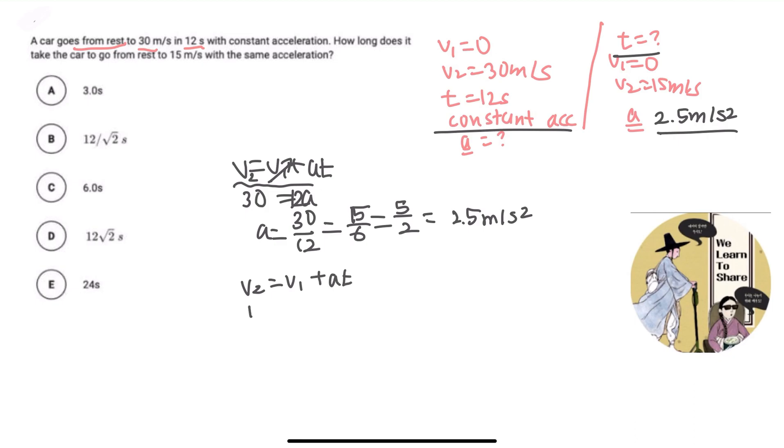So v2 would be 15 equals 0 plus 2.5 t, and then t would be 15 over 2.5, which is equal to 6.